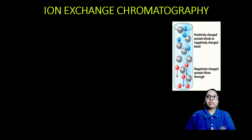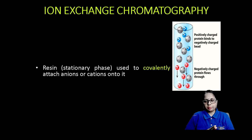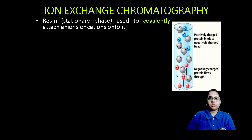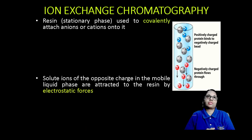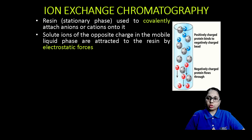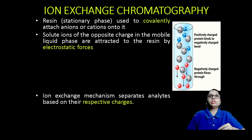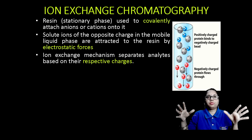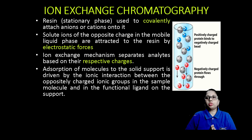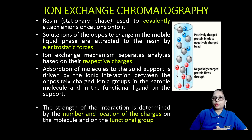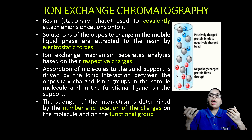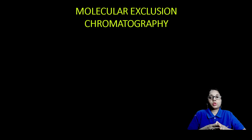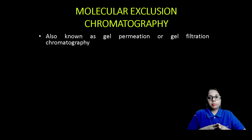In ion exchange chromatography, positively charged proteins bind to the negatively charged beads. The resins used as stationary phases are used to covalently attach anions or cations. Solute ions of opposite charge in the liquid phase are attracted to the resin by electrostatic force. The ion exchange mechanism separates analytes based on their respective charges. Absorption of molecules on the solid support is driven by ionic interactions between the oppositely charged ionic groups in the sample molecule and the functional ligands on the support. The number and location of charges on these functional groups are also very important in the separation.